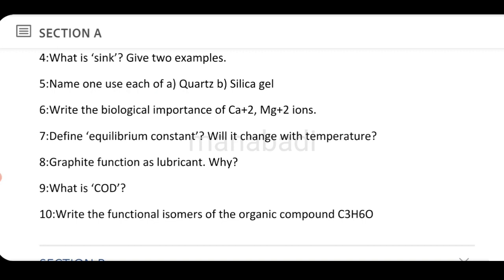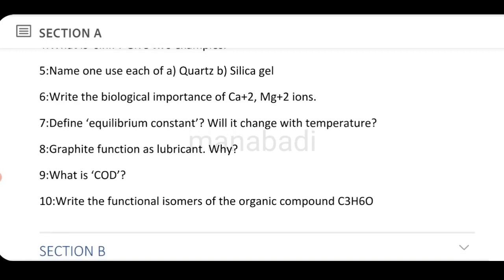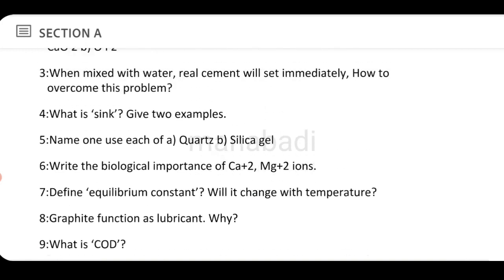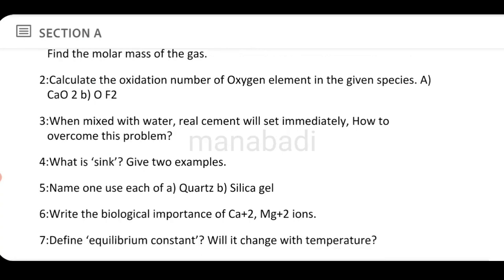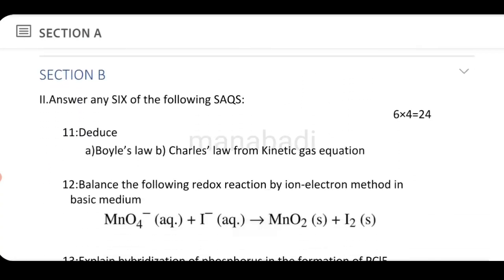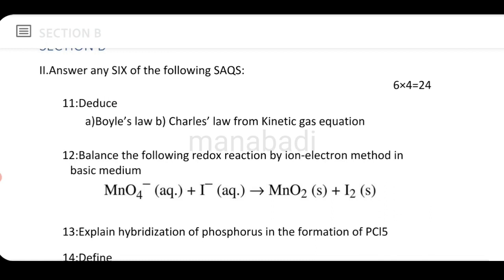Next: Write the functional isomers of the organic compound C₃H₆O. This completes the very short Section A. Moving to Section B — the short answer section. You need to choose questions worth 4 marks each.